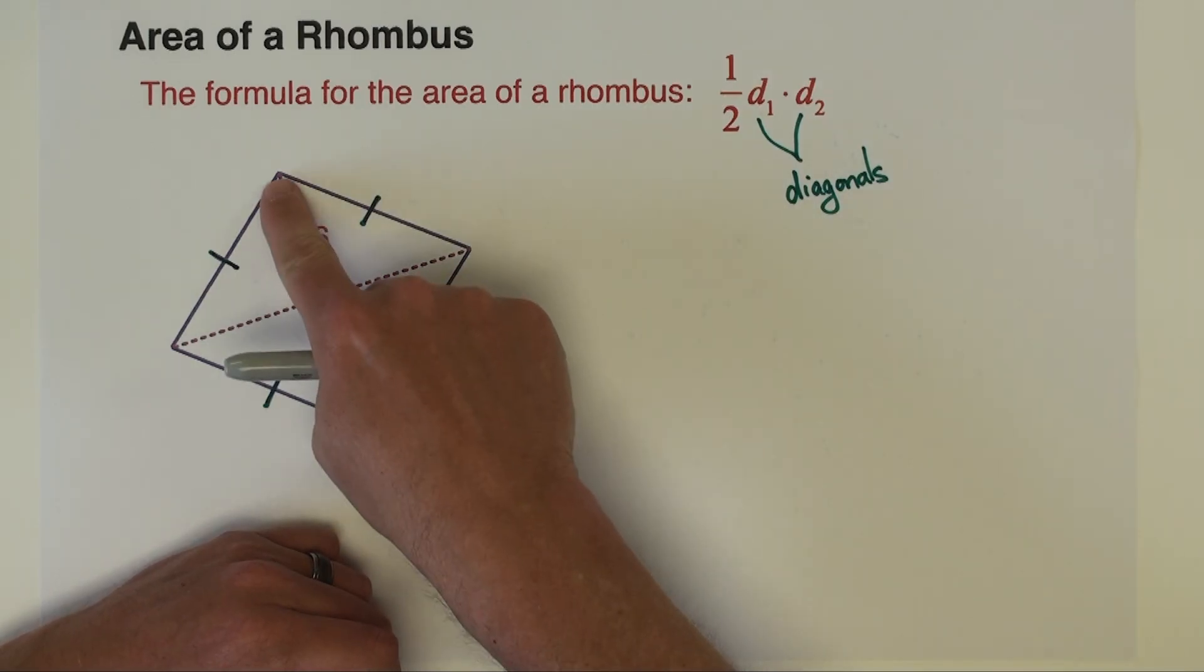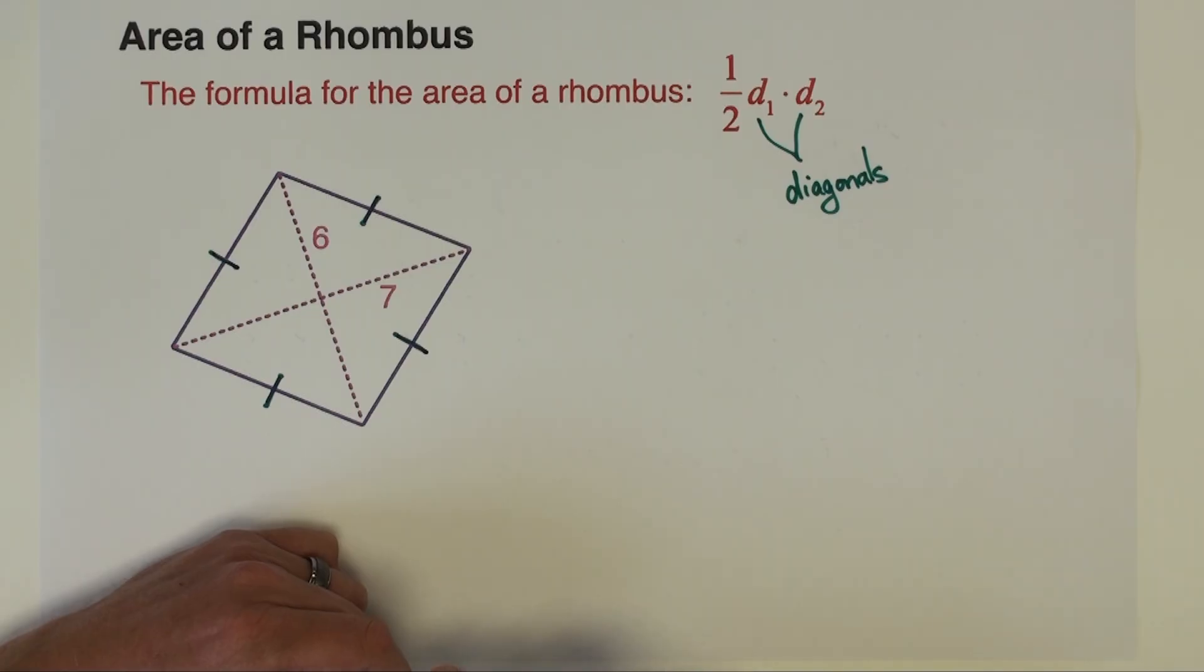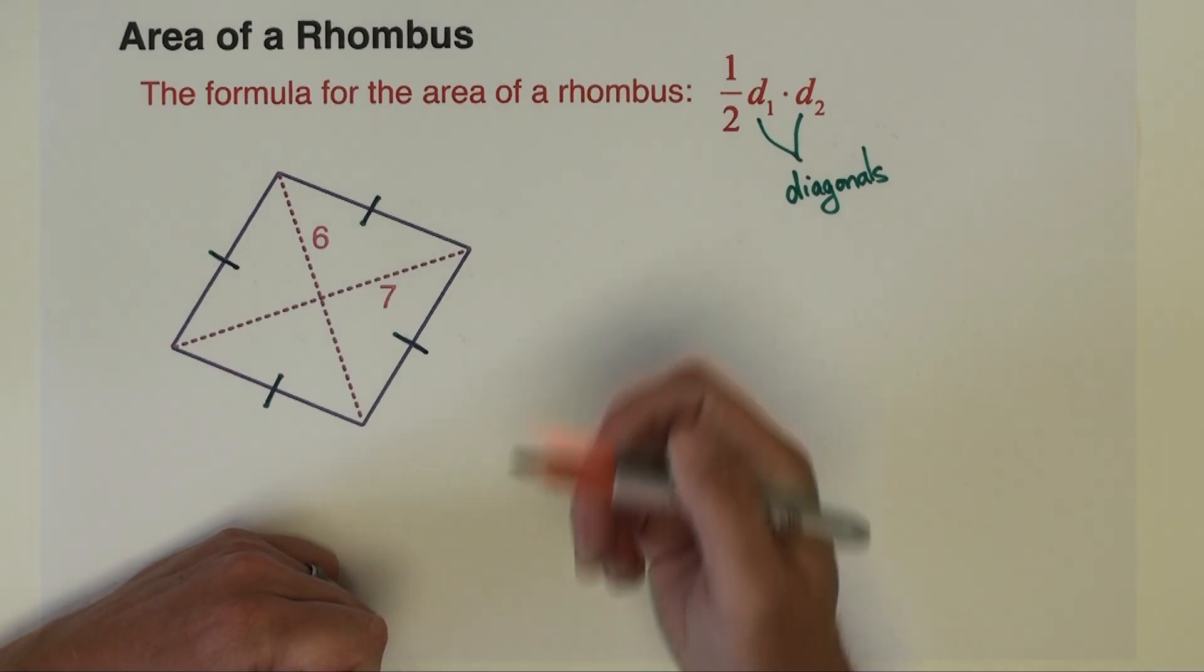So you have to know the lengths of the diagonals that go across the rhombus through the middle. Now sometimes those lengths will be given to you. Sometimes you need to do a little bit of work to find them.